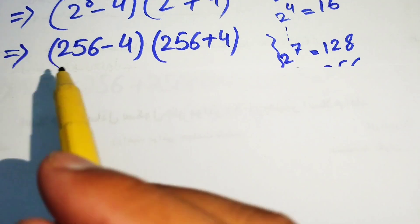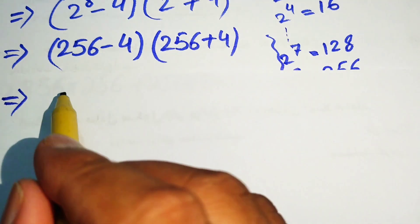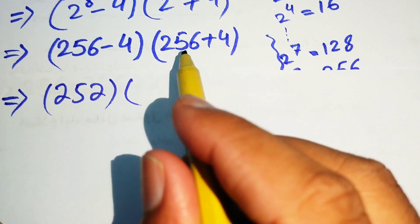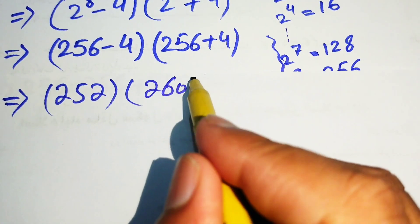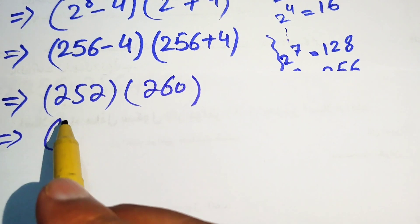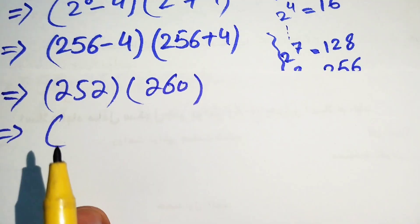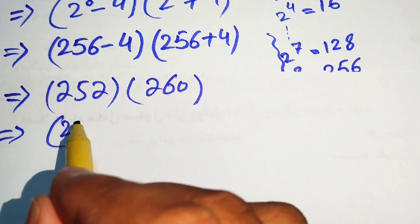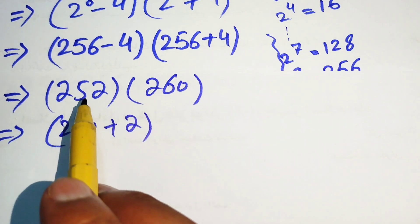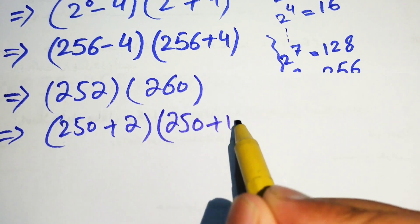Now we have two factors. We calculate 256 minus 4 equals 252 and 256 plus 4 equals 260. We then rewrite these two terms: 252 is written as 250 plus 2, and 260 is written as 250 plus 10.